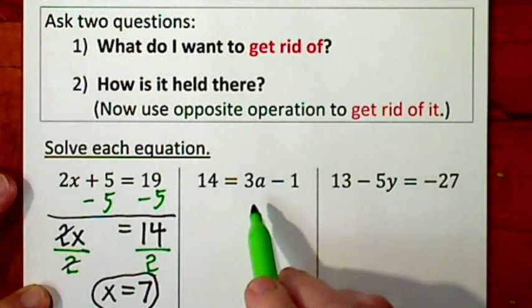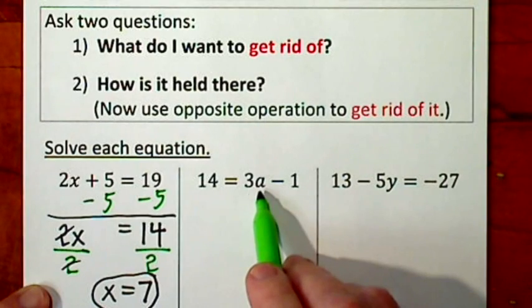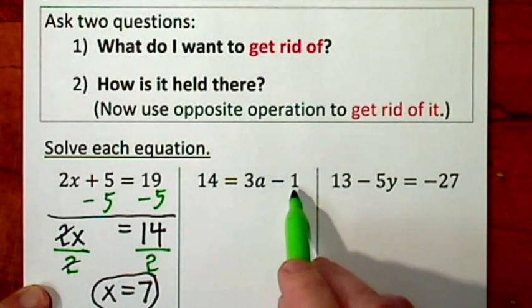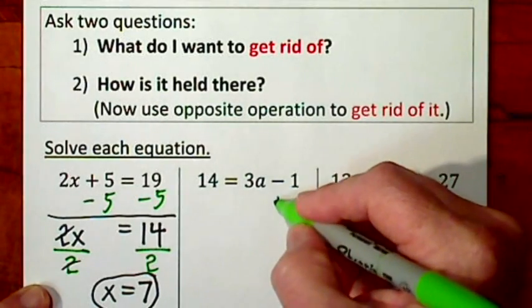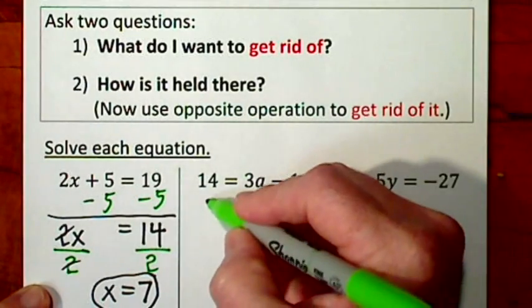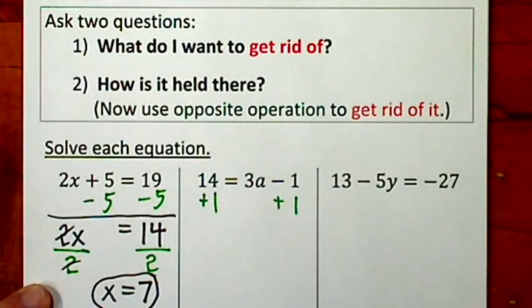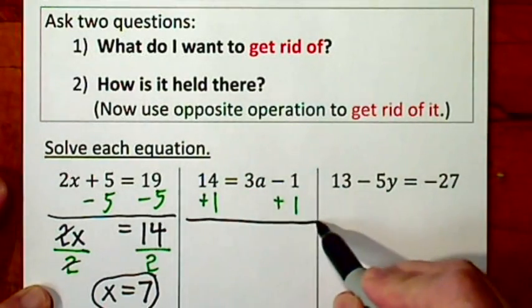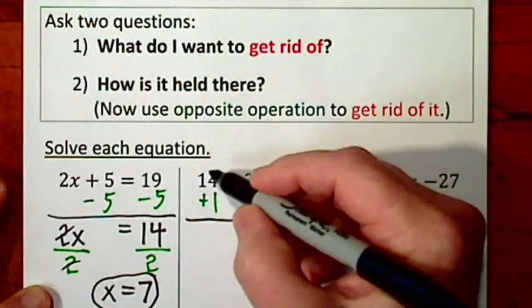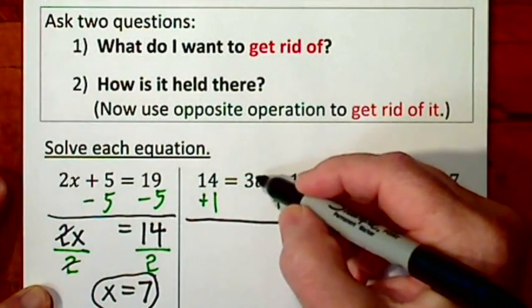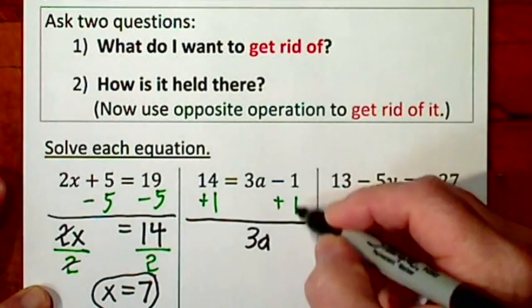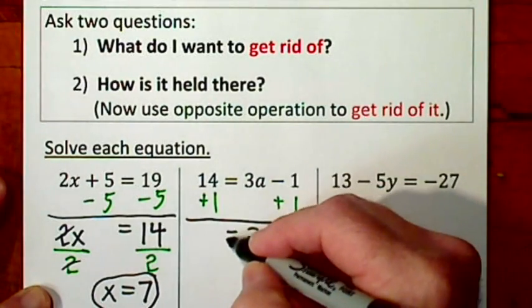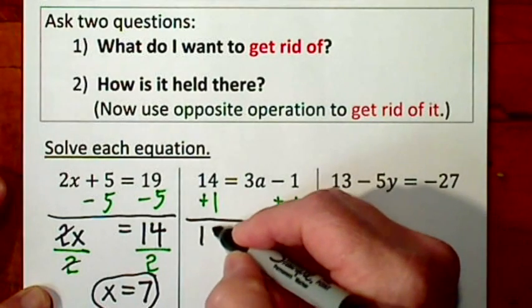On this problem, I want a all by itself. I have a 1 being added or subtracted, I'll get rid of that first. So that's a negative 1. I'll put a positive 1. Other side of the equal sign, positive 1. Just draw a line and bring everything down. I'll start here. Here, 3a comes down. That's a zero.